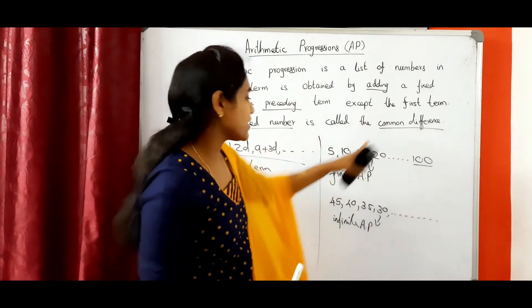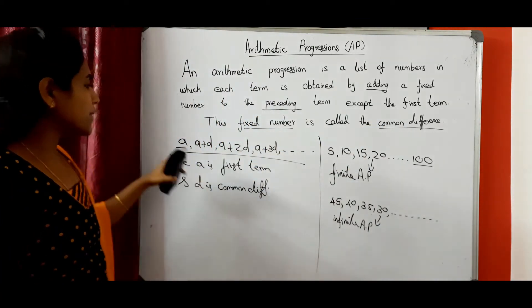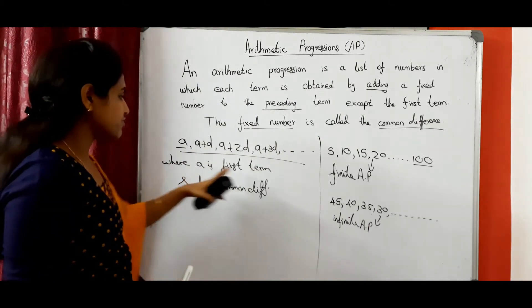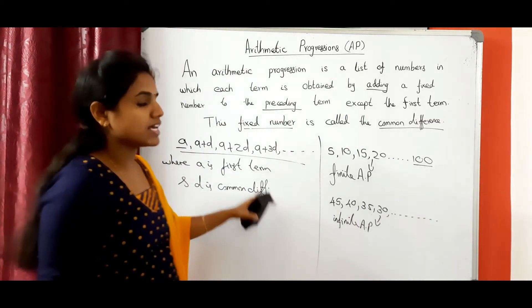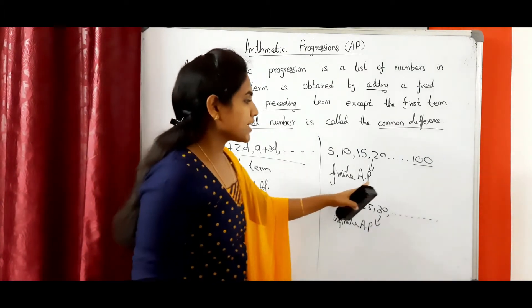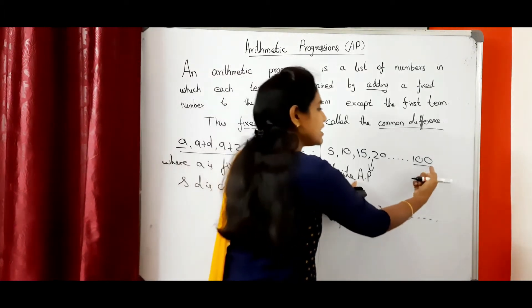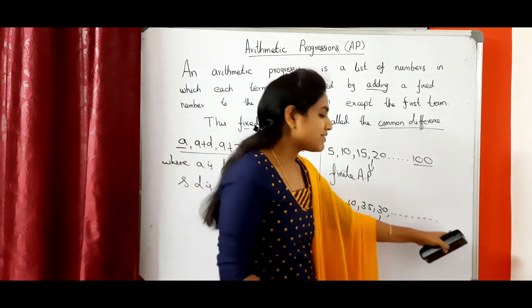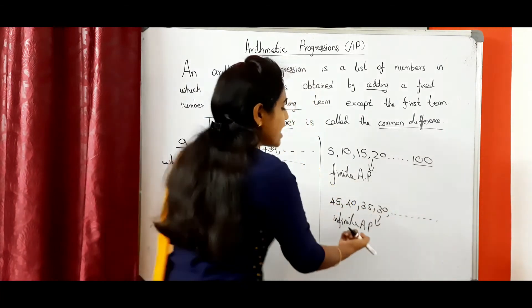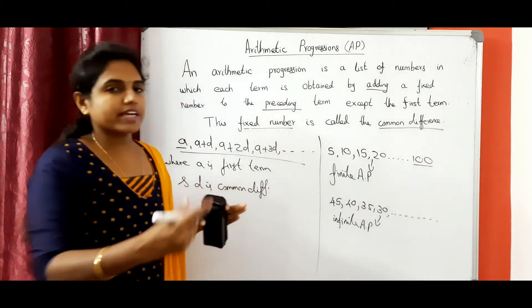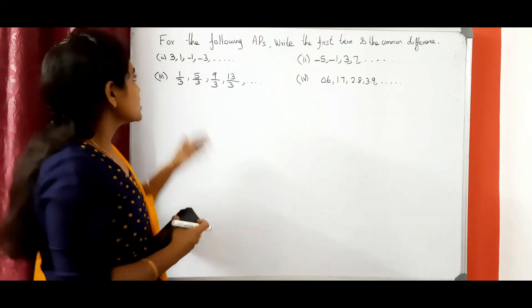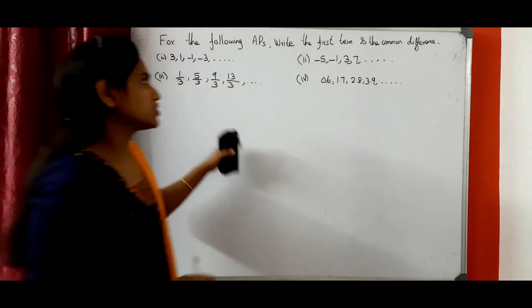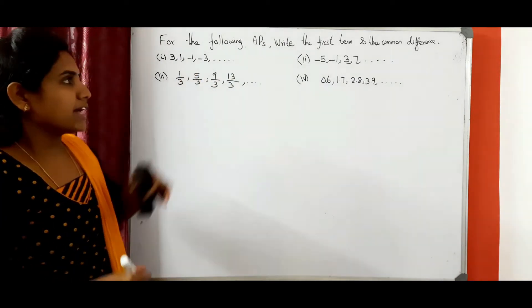So what is AP? AP means it has the common difference. The common difference means it is a fixed number; we need to add the fixed number to the preceding term. The fixed number is called the common difference. If each difference is equal, we can say it is an AP; otherwise it is not an AP. The general form of AP is: A, A plus D, A plus 2D, A plus 3D, etc., where A is the first term and D is the common difference. Now we can enter the problem. For the following APs, write the first term and the common difference.